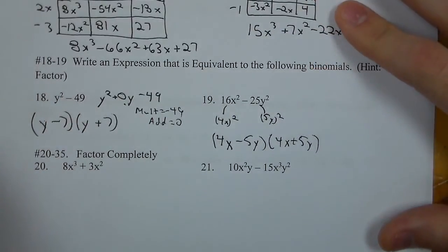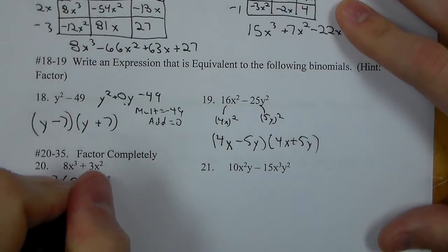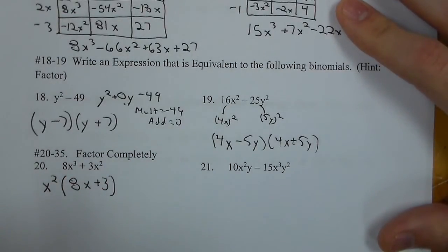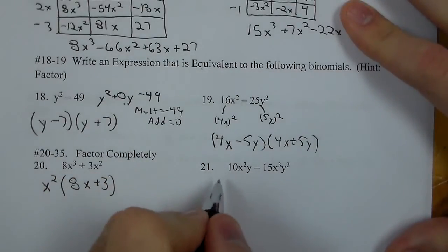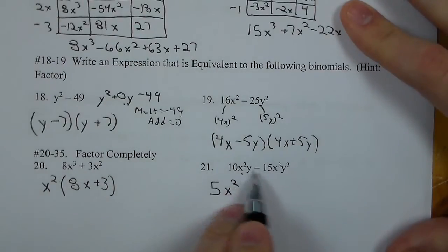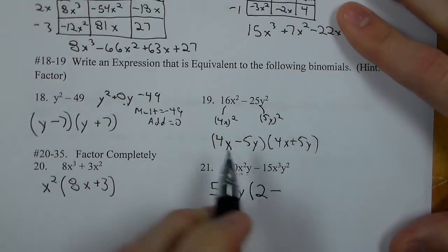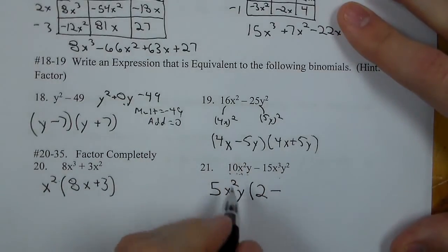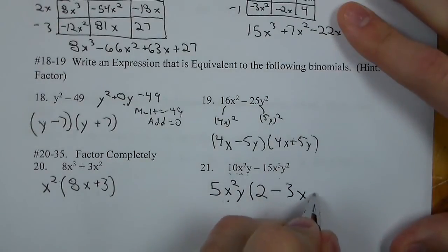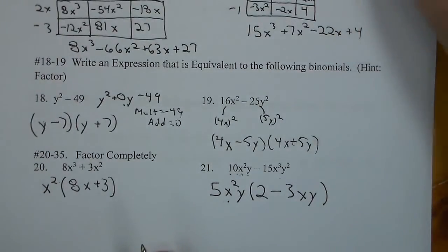Problem 19 has a coefficient, and we're looking at square roots: 4x squared and 5y squared. So it becomes 4x minus 5y times 4x plus 5y using the difference of two squares rule. For number 20, I factor 8x to the 3rd plus 3x squared — I can take out an x squared, leaving 8x plus 3. No more common factors, so we stop. Number 21: from 10 and 15 take out a 5; from x squared and x to the 3rd take x squared; from y and y squared take y. Dividing through gives 5x squared y times 2 minus 3xy.